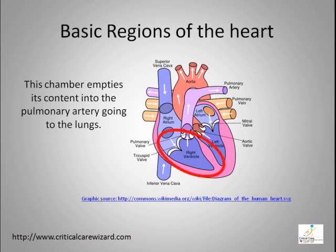The blood of the right ventricle then passes through a valve called the pulmonary artery valve. The pulmonary valve has a three-flap, half-moon-shaped valve that controls the reflux when the ventricle muscle is at rest.